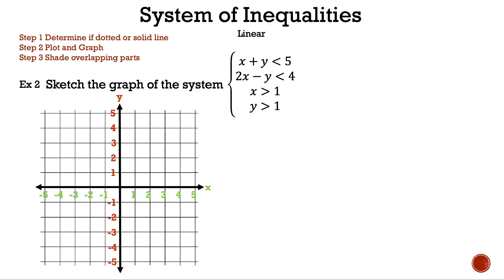Let's move on to example 2. Now, let's read the question. Sketch the graph of the system where we have x plus y is less than 5, 2x minus y is less than 4, x is greater than 1, and y is greater than 1.